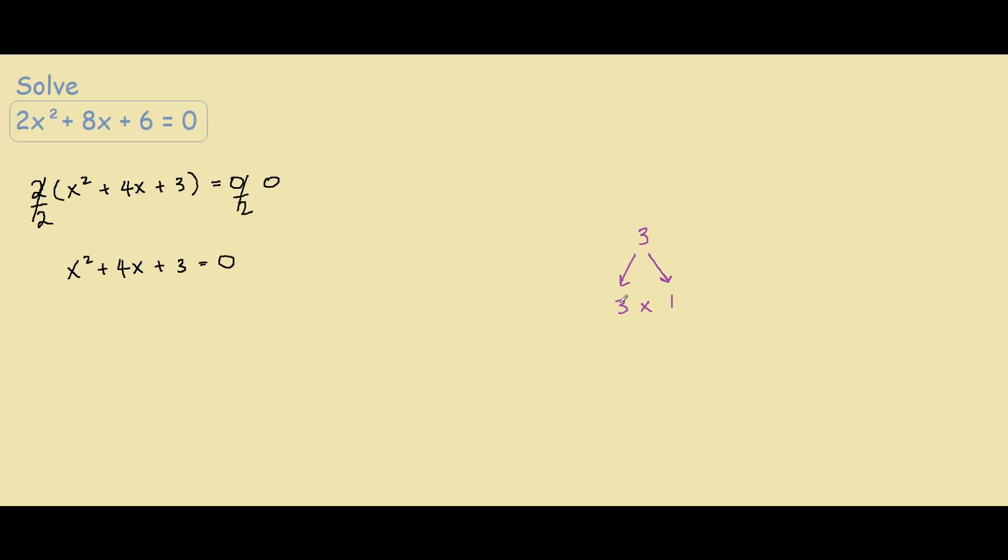And this 3 times 1, the 3 and 1 add up to 4, so it can indeed be factored. So what we do is have 2 brackets like this equals 0.